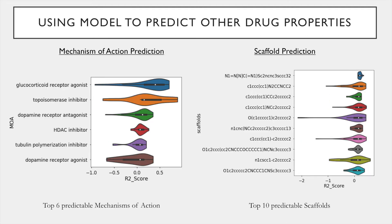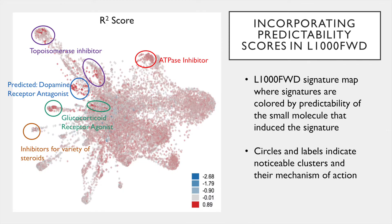We also used the predictability scores to computationally predict the mechanism of action. In the violin plot on the left, the top three mechanisms of action are the same that were determined qualitatively, giving more support to that observation. We also used the predictability scores to predict the chemical scaffold, which you can see on the right. Finally, we recolored the L1000 firework display by the predictability of each compound for each signature. The noticeable clusters are circled, and the mechanism of actions of the small molecules in that cluster are labeled. Again, the mechanisms are very similar to those from the qualitative analysis and the violin plots.